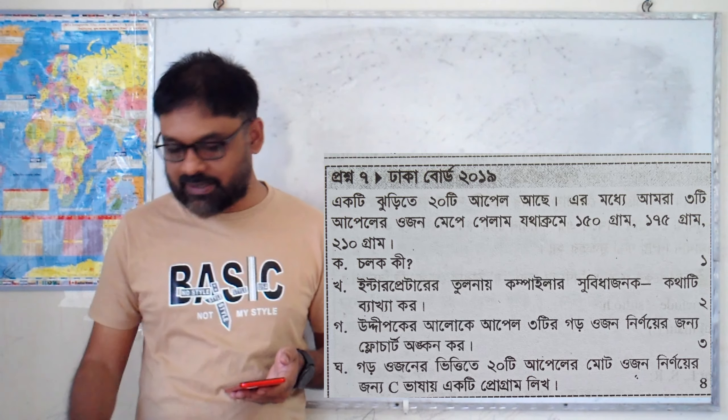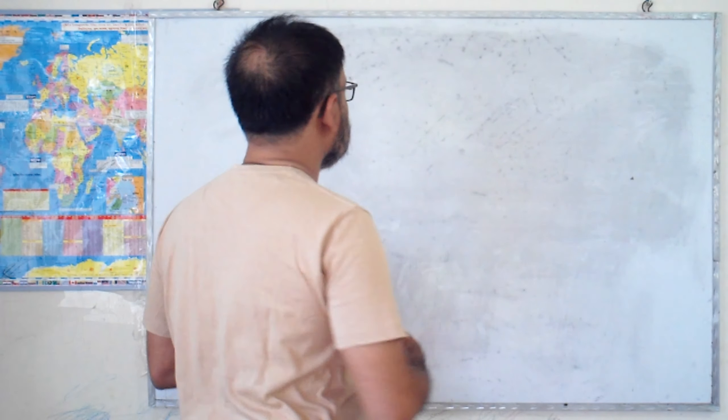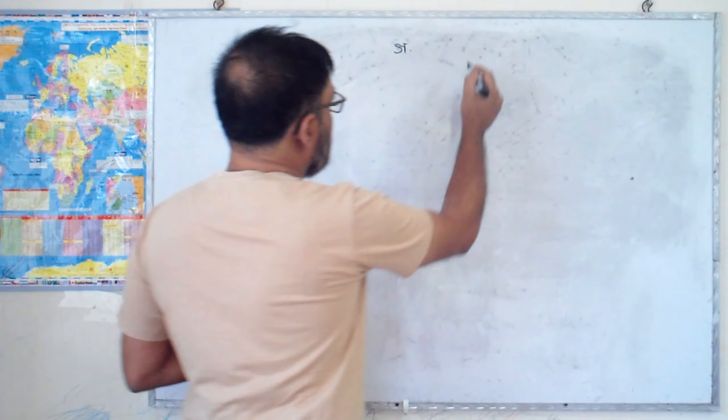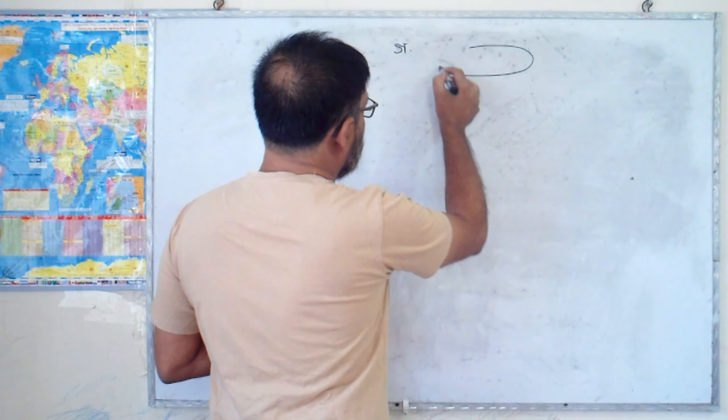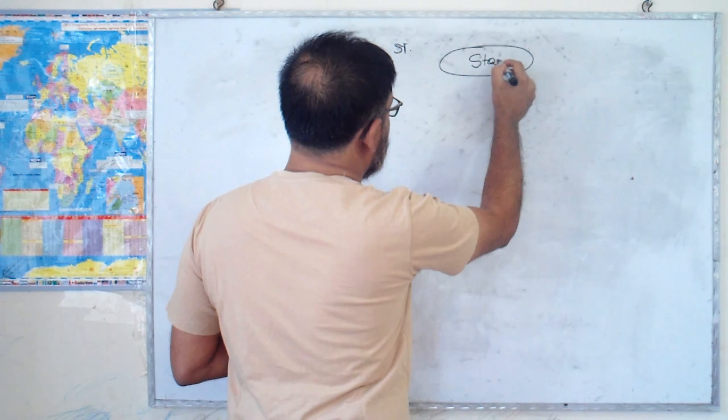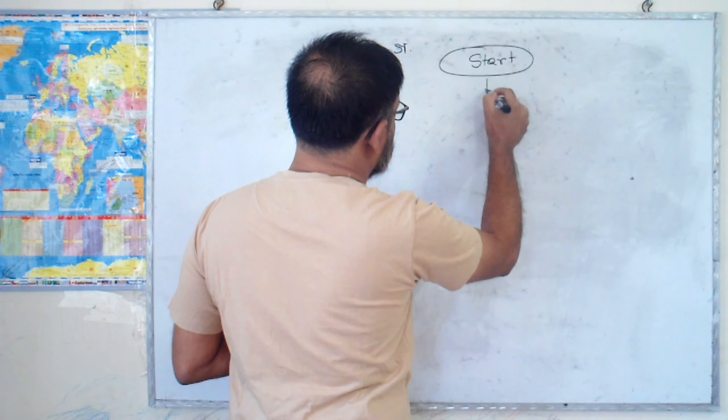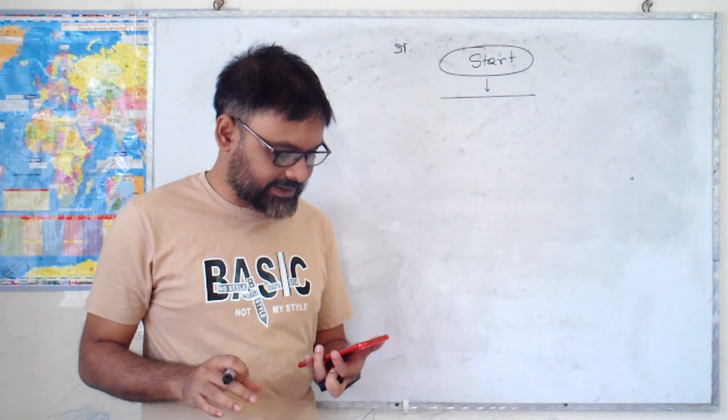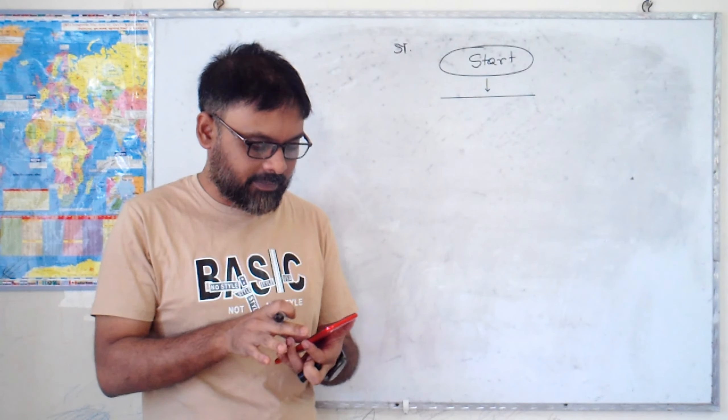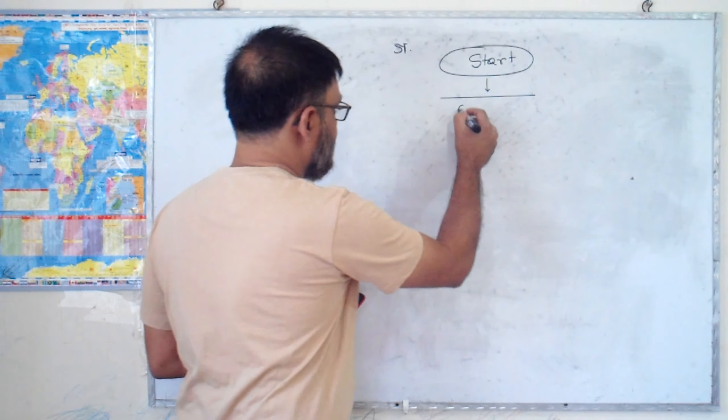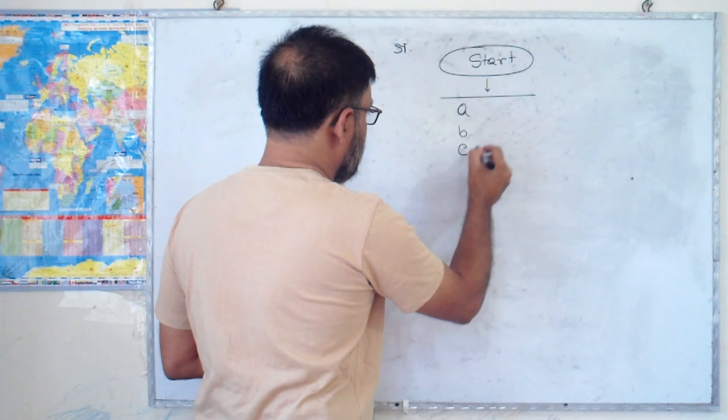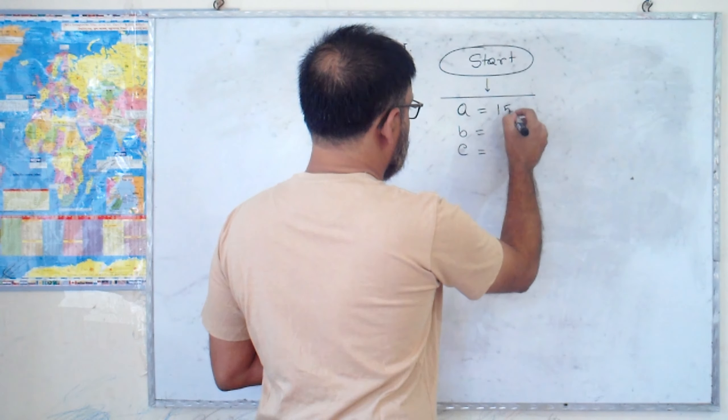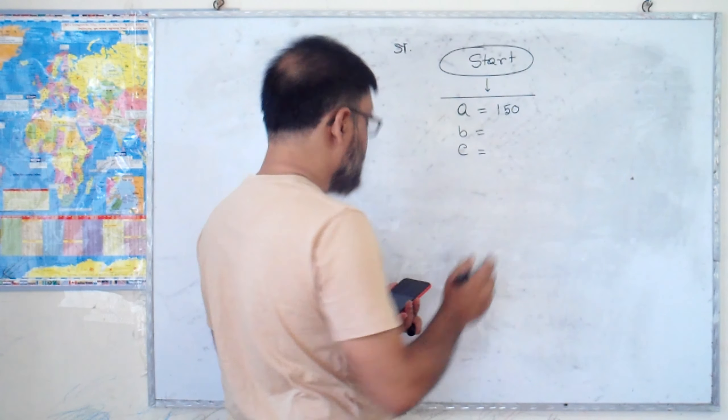So let's go to the flowchart. Flowchart. Start. If you have three values already, you will initialize. One method A, method B, then one method A. Then the method of using the values.